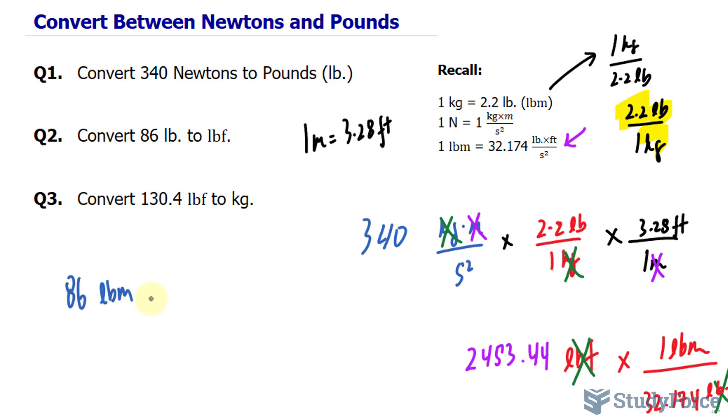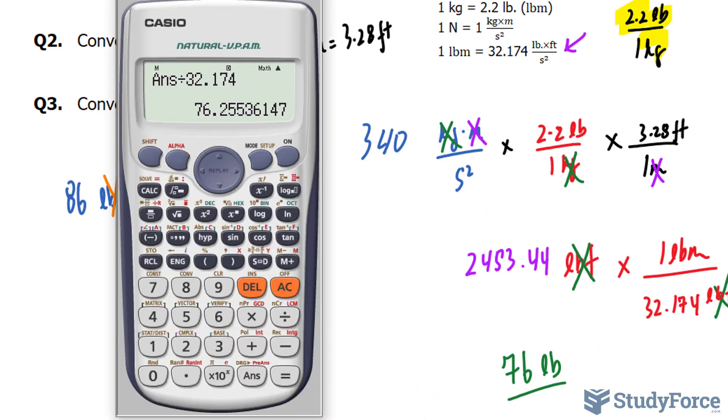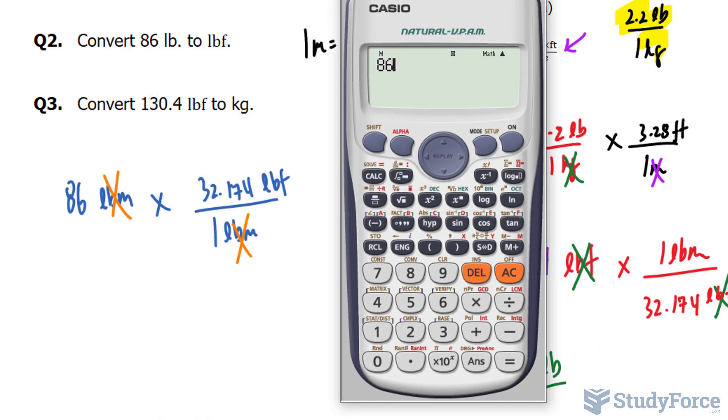And we'll multiply this by, again, that conversion ratio where I'll put 1 LBM at the bottom and 32.174 LBF at the top. This will cancel out with that. And using our calculator, we have 86 times 32.174.